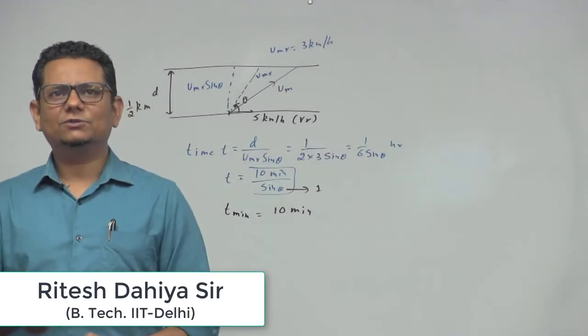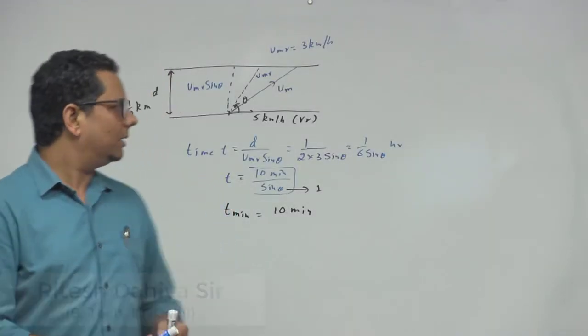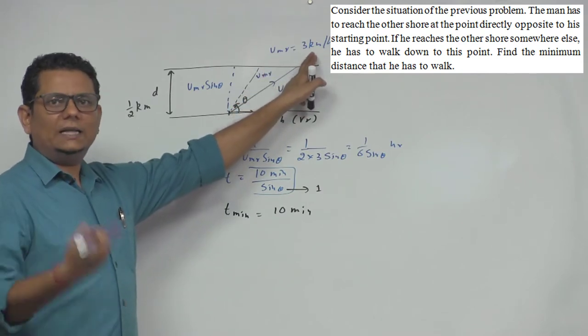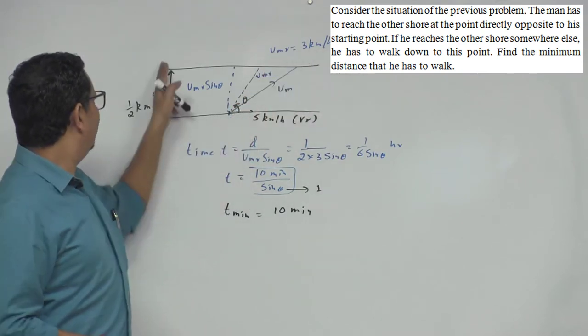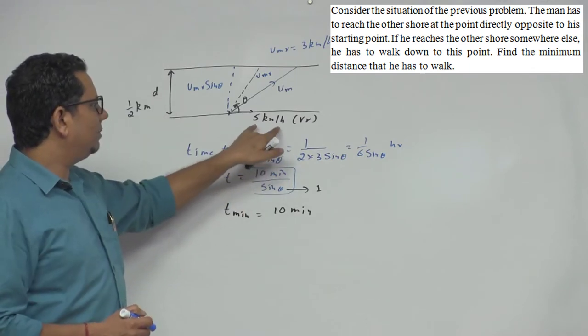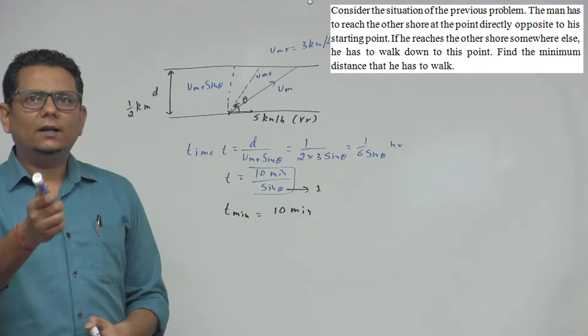Next question says consider the situation of the previous problem. The man has VMR of 3 km/hr traveling across a river. The river is half km wide and VR, the river speed, is 5 km per hour.